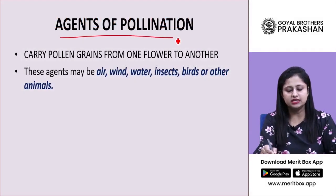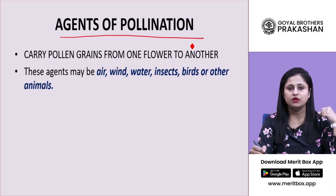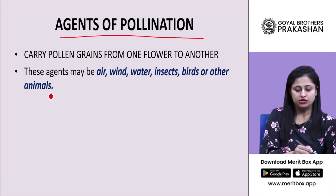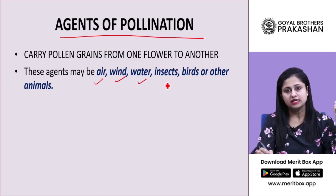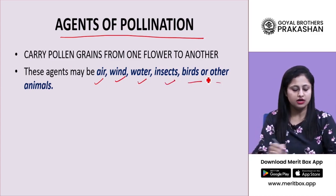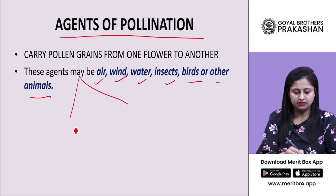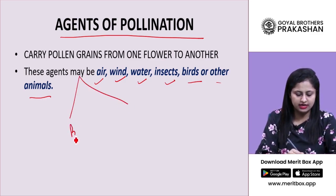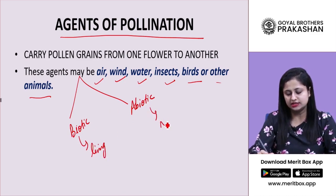The agents of pollination are many types which carry out the process of pollination. Those are air, wind, water, insects, birds, or other animals. Based on their nature, they can be divided as biotic or abiotic agents. Biotic agents are living and abiotic agents are non-living.